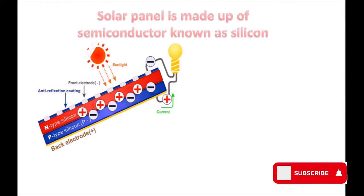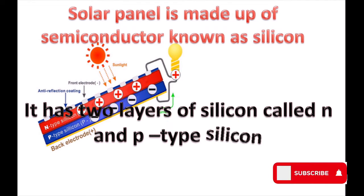Solar panels are made up of a semiconductor known as silicon. They have two layers of silicon called N-type and P-type silicon.